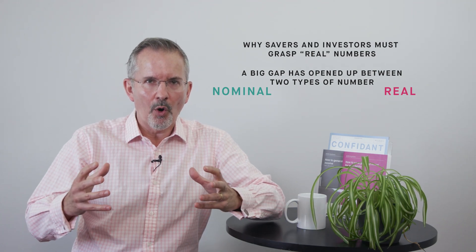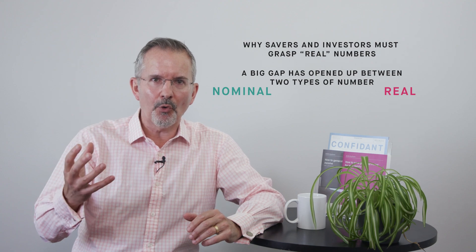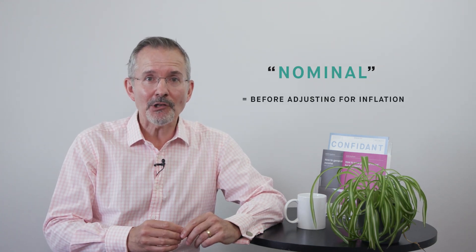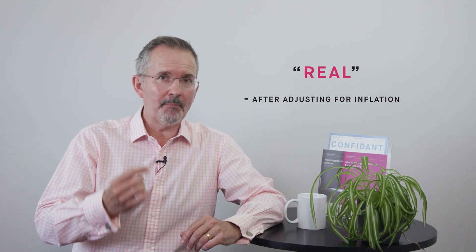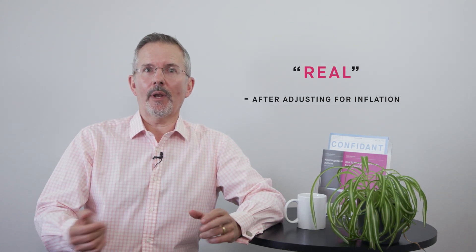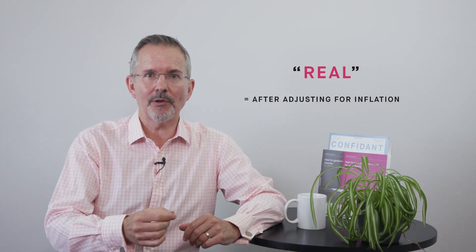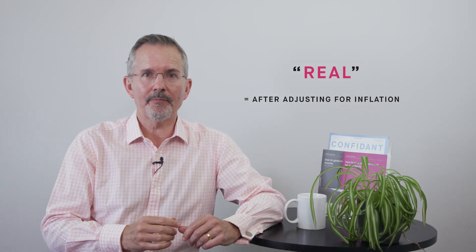What are these buzzwords? A nominal number is the number before you make any adjustment for inflation. A real number, as economists call it, is the equivalent having made the adjustment for inflation. I'll give an example in just a moment.